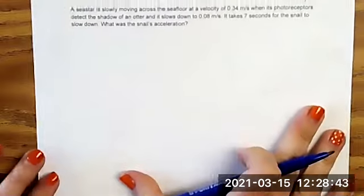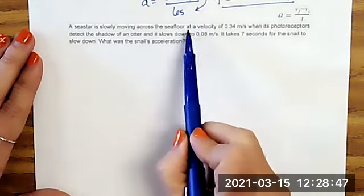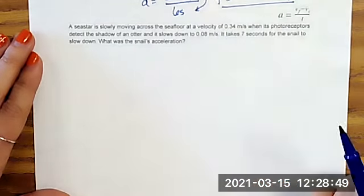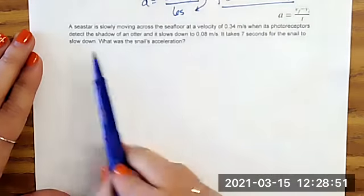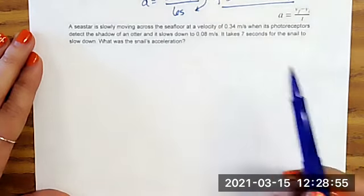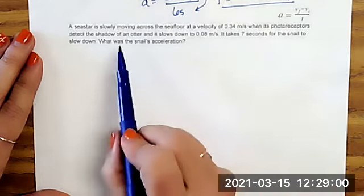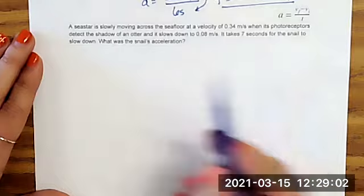All right, let's try another one. So I have a sea star moving slowly across the sea floor at a velocity of 0.34 meters per second when its photoreceptors detect the shadow of an otter and it slows down to 0.08 meters per second. It takes seven seconds for the snail to slow down. Oh, sorry, sea star. What is its acceleration?